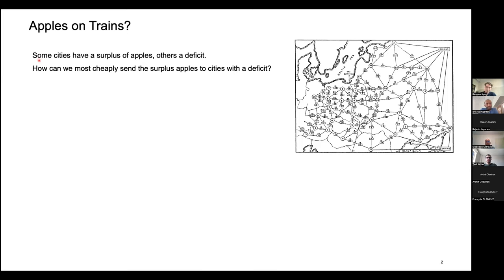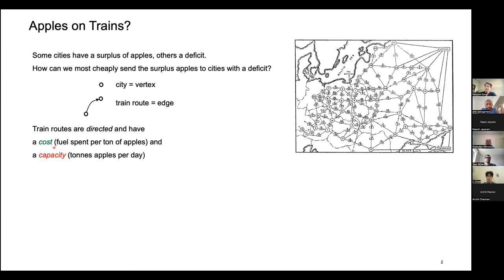To get us started, I want to think about an example — transporting apples on trains in the USSR, because this is in some sense where it all started. Some cities have a surplus of apples and others a deficit, and we ask how we can most cheaply send the surplus apples to cities with a deficit. A city is represented by a vertex, and train routes are directed edges with a cost (fuel per ton of apples) and a capacity (tons per day).